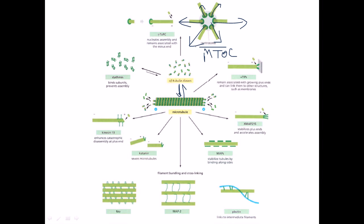Stathmin is a protein that binds to the tubulin subunit - probably the alpha subunit - and prevents its assembly into a microtubule. Also, +TIPs are proteins that remain associated with the growing plus end and can link the microtubule to other structures such as membranes.